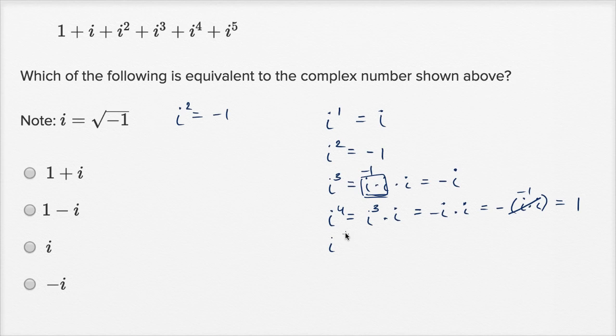And so what's going to be i to the fifth power? Well, that's going to be i to the fourth power times another i. Well, i to the fourth power, we just saw is just one, times i is equal to i. And we could keep going, and this is one of the fun things about the imaginary unit i, is that we see this cycle as we increase the exponent. We do a bunch of examples of this on Khan Academy, but we've gotten all the powers that we care about.